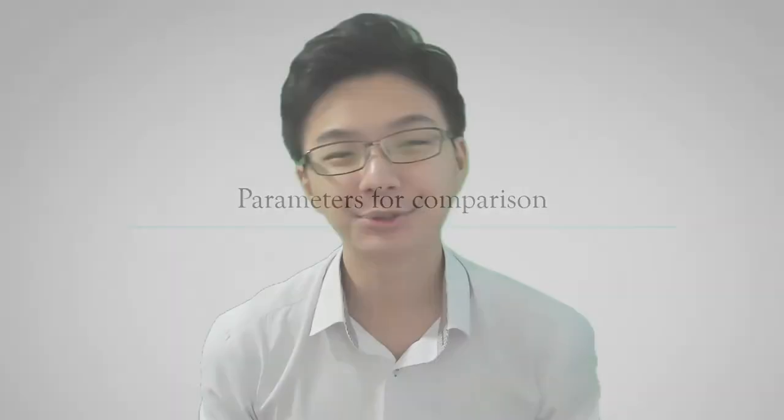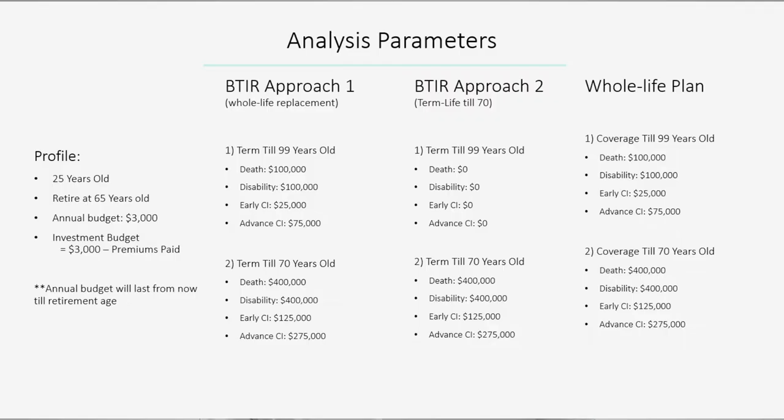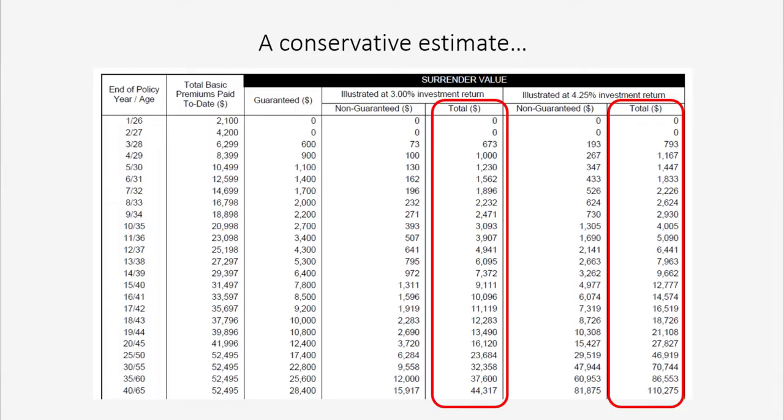Now for the parameters used in this comparison — please pause this video if you want to digest the information. In terms of cash value behaviour of the whole life plan, I've taken an average of both values based on an estimate of 3% and 4.25% investment return. By doing so, we are being more realistic instead of being too optimistic or pessimistic about the expected returns of whole life insurance policies.